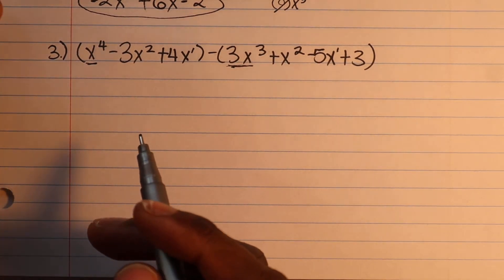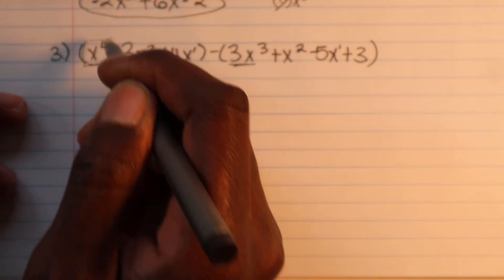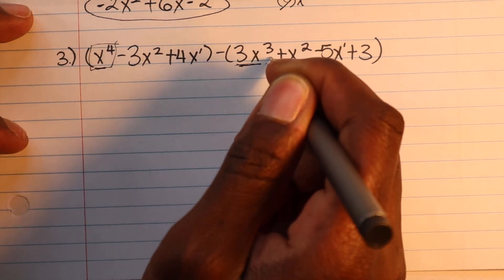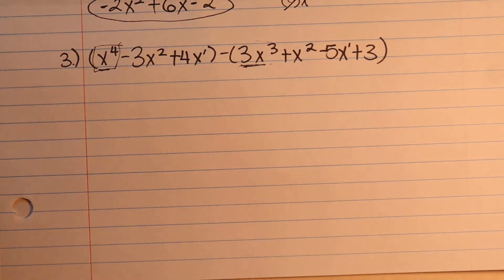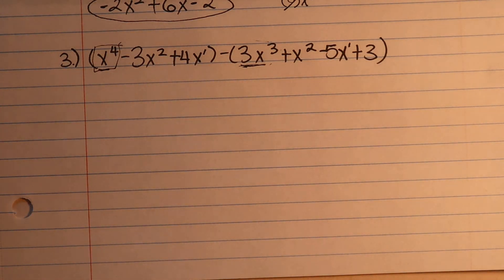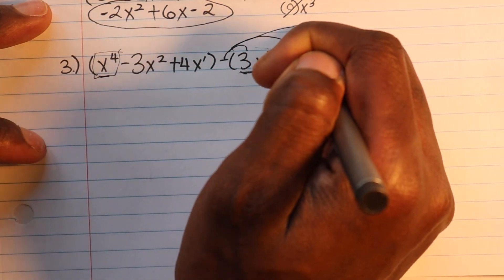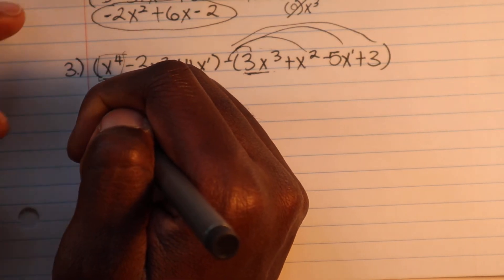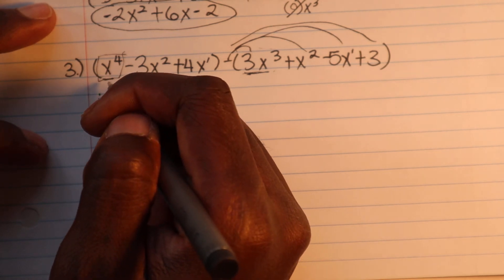So when breaking this down, terms without a matching like term still stay — we can't simplify them. The x⁴ stays, the 3x³ stays, because we're comparing orange to orange and there's nothing to combine them with. We also distribute the negative sign, so the signs inside the second parentheses flip accordingly.